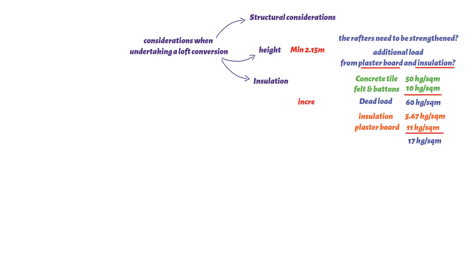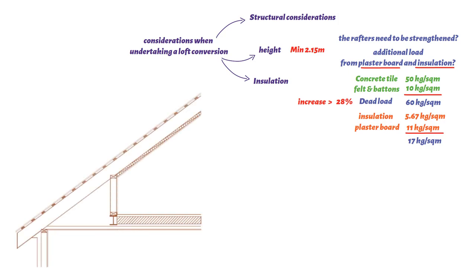This is an increase of just over 28%. In addition to this, the thickness of the rafters may be determined by the type of felt lining used. A breathable felt will require a 25 millimeters air gap between the underside of the felt and the insulation, whereas a bituminous felt will require a 50 millimeters air gap.